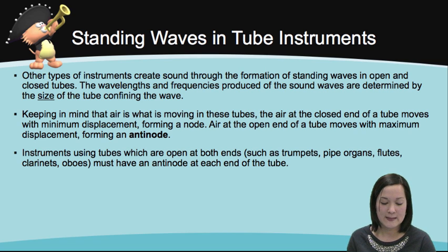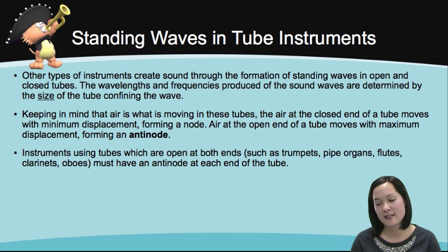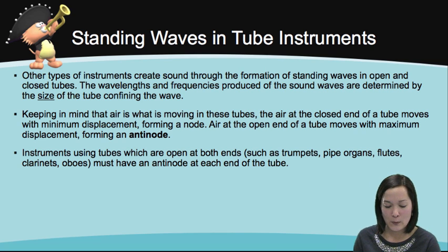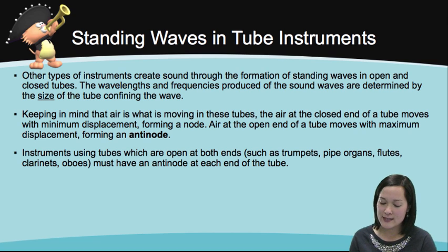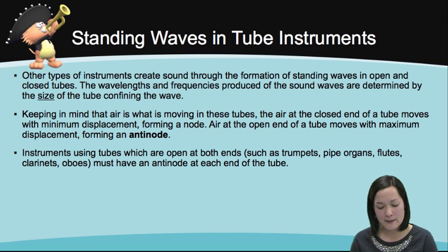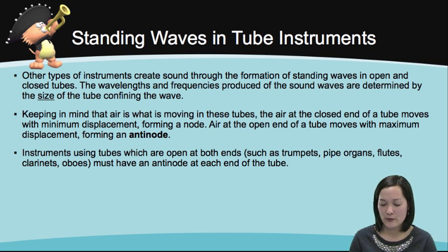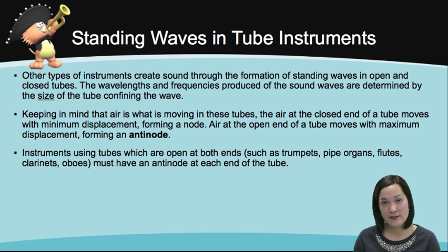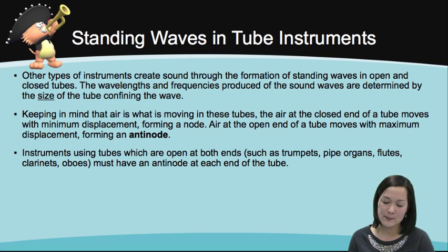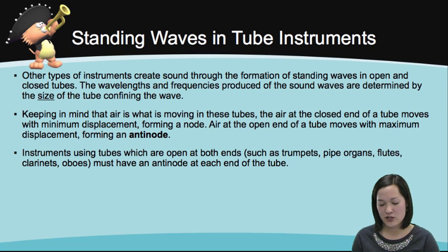Other types of instruments create sound through the formation of standing waves in open and closed tubes. The wavelengths and frequencies produced are determined by the size of the tube confining the wave. Keeping in mind that air is what is moving in these tubes, the air at the closed end moves with minimum displacement, forming a node. Air at the open end moves with maximum displacement, forming an anti-node. Instruments using tubes that are open at both ends, such as trumpets, pipe organs, flutes, clarinets, and oboes, must have an anti-node at each end of the tube.